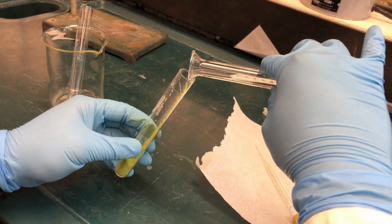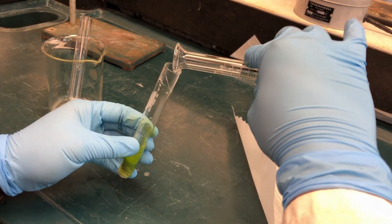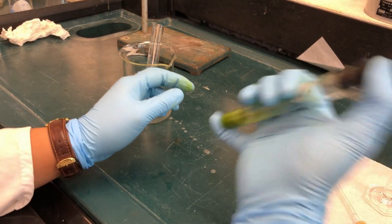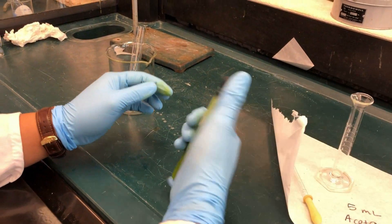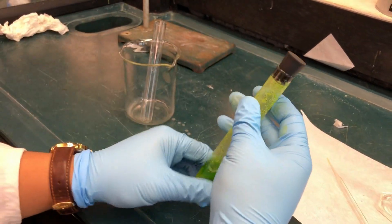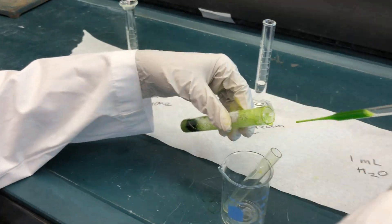Add 5 milliliters of acetone to the test tube and stopper with a silicone stopper. Shake for 5 minutes. Be sure to hold your thumb over the stopper so that it can't pop out. Remove the stopper occasionally to remove pressure inside the test tube.